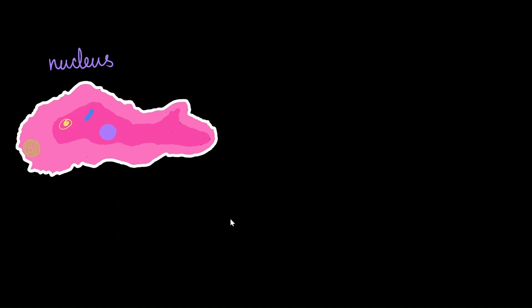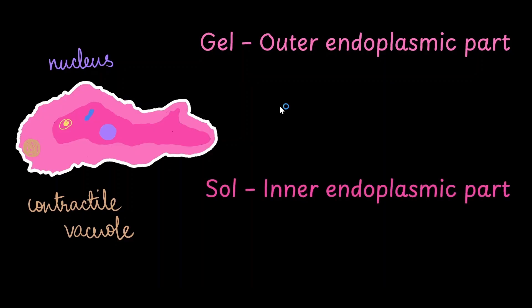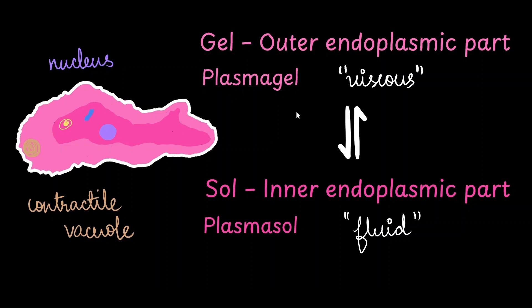The reason we are learning about this is because amoeba cytoplasm can also exist in these two states. Consider an amoeba — it has its nucleus as well as a contractile vacuole. The outer endoplasmic part is in a gel form and the inner part is in the form of sol, so the outer part is more viscous compared to the inner part. We use the term plasma gel for the outer endoplasmic part and plasma sol for the inner endoplasmic part. Plasma gel and plasma sol are interchangeable.